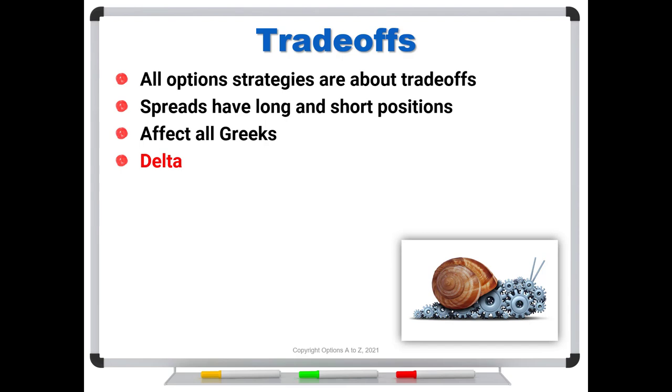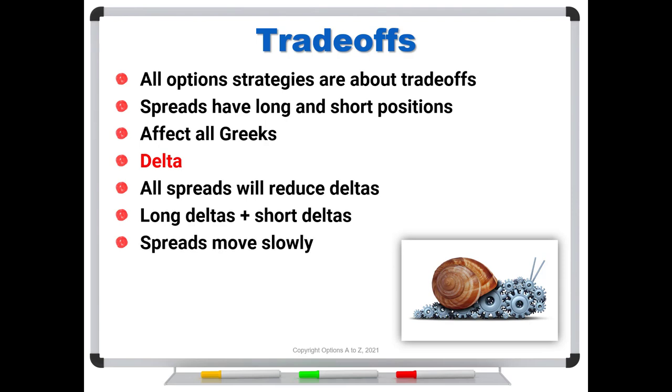And the thing that you want to understand is that all spreads will reduce your deltas. That's because you've got long deltas on the one that you own, you've got short deltas on the one that you sold, and we just combine them, add them together, and that's going to be what we call your net delta. So the idea to understand is that spreads move slowly. These are not fast movers. Again, that doesn't make them bad, it just makes them different. But you have to be aware of this.